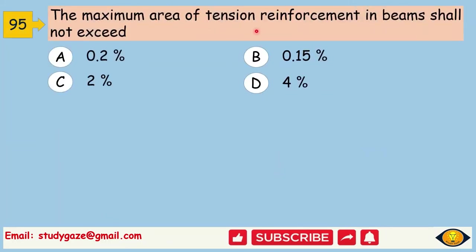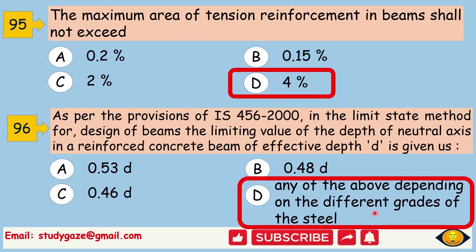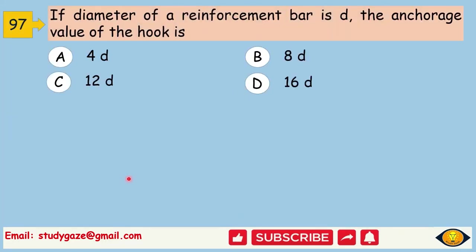The maximum area of tension reinforcement in beams shall not exceed 4%. As per the provisions of IS 456-2000, in the limit state method for design of beams, the limiting value of depth of neutral axis in a reinforced concrete beam of effective depth D is given as any of the above depending on the different grades of the steel. So, all three is correct for different grades of the steel. If diameter of reinforced bar is D, the anchorage value of the hook is 16D.